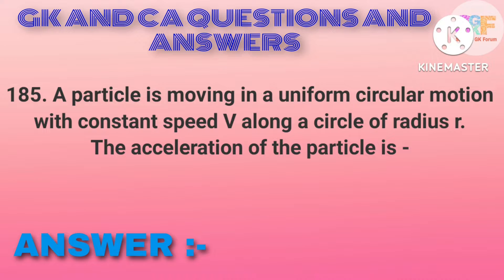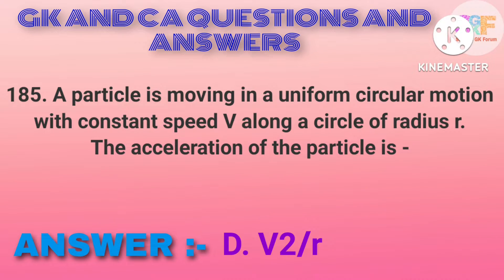A particle is moving in a uniform circular motion with constant speed V along a circle of radius R. The acceleration of the particle is — Option D: V² / R.